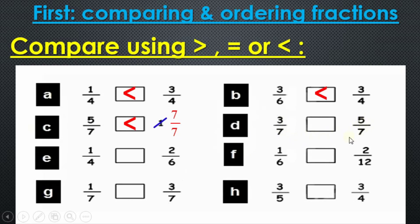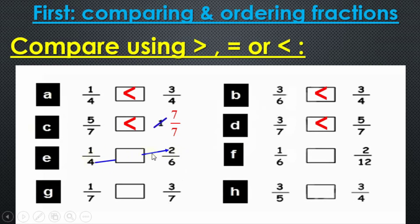Question number d: three sevenths or five sevenths. The denominators are equal — so which is bigger, three or five? Five sevenths is the bigger one. Question number e: one fourth or two sixths. Neither the numerators nor the denominators are equal. Now I'll use what's called the 'scissors' (cross multiplication) — the number on the bottom times the number on top of the other fraction.